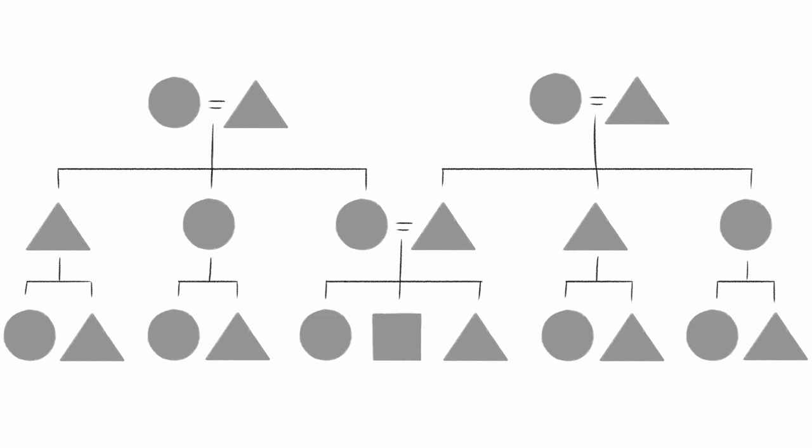Let's start with the Iroquois system. In the generation above you, this system classifies male relations of the paternal line together, so your father's brothers are your fathers, and female relatives of the maternal line, so your mother's sisters are also your mothers.